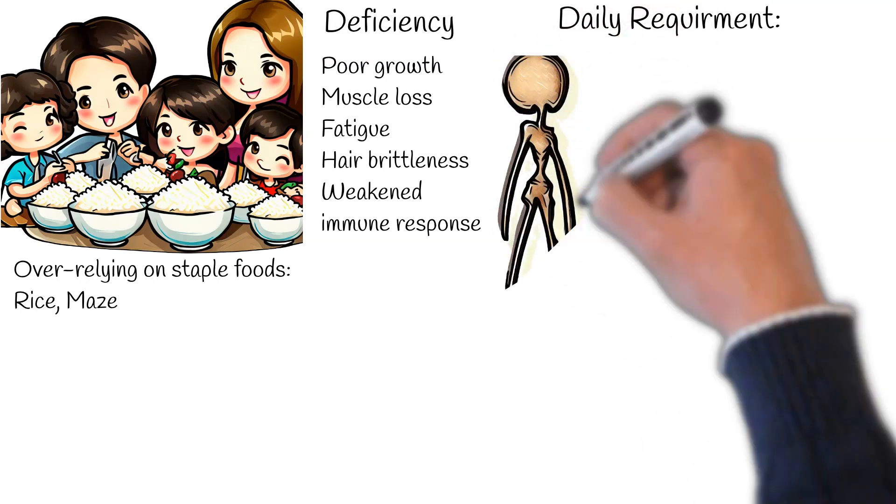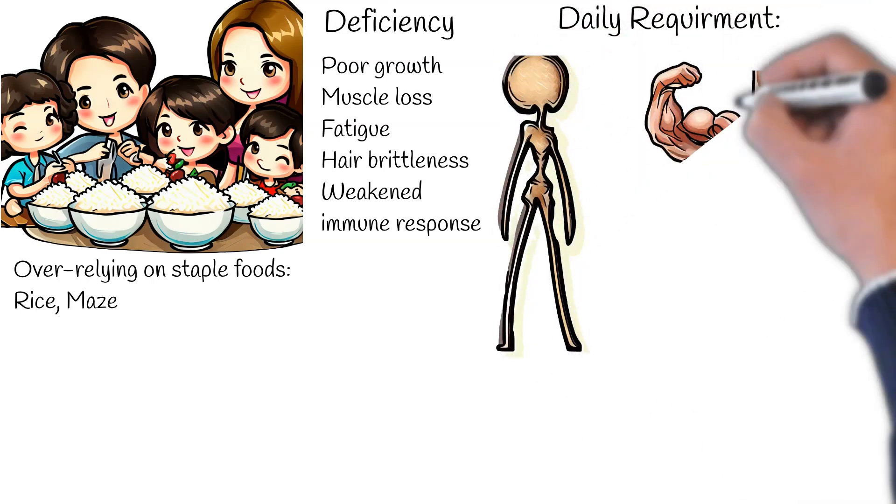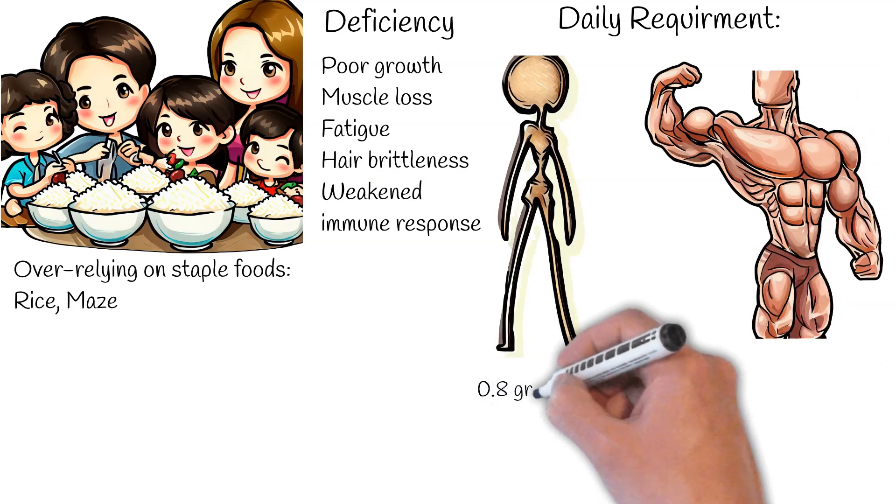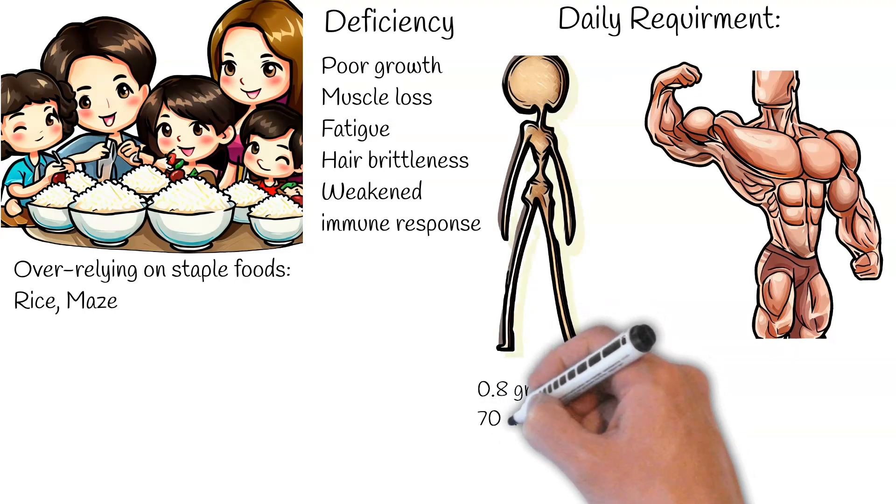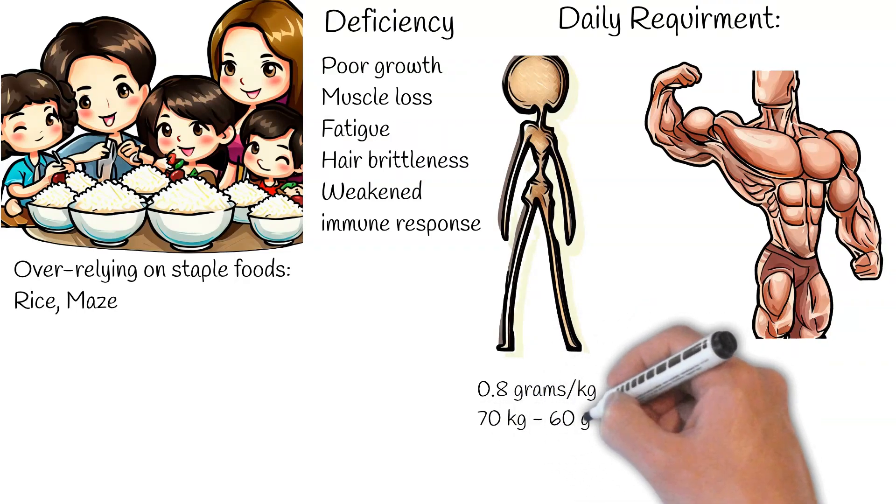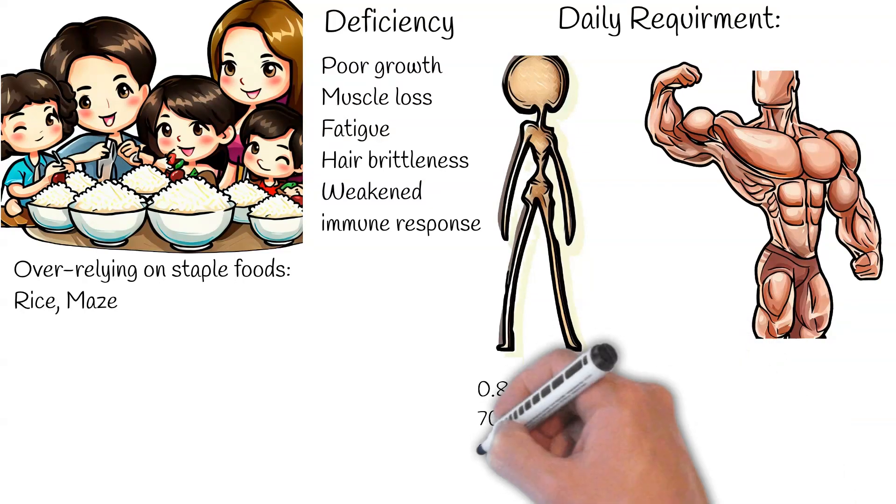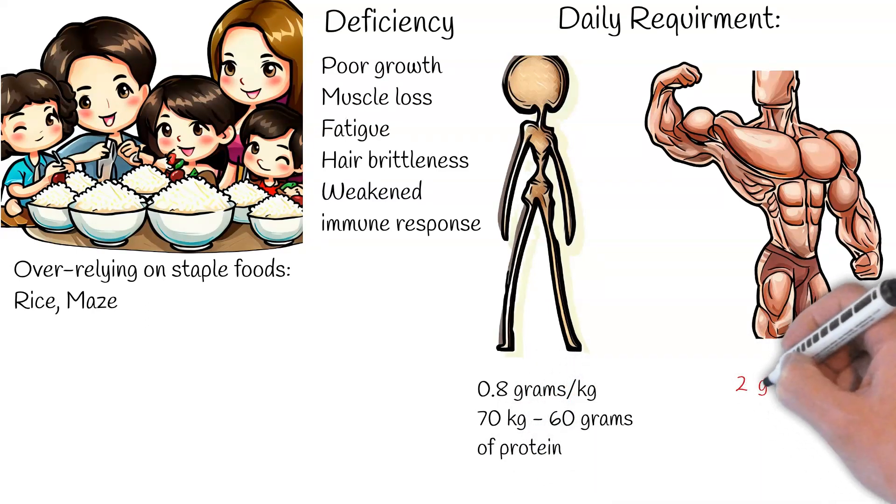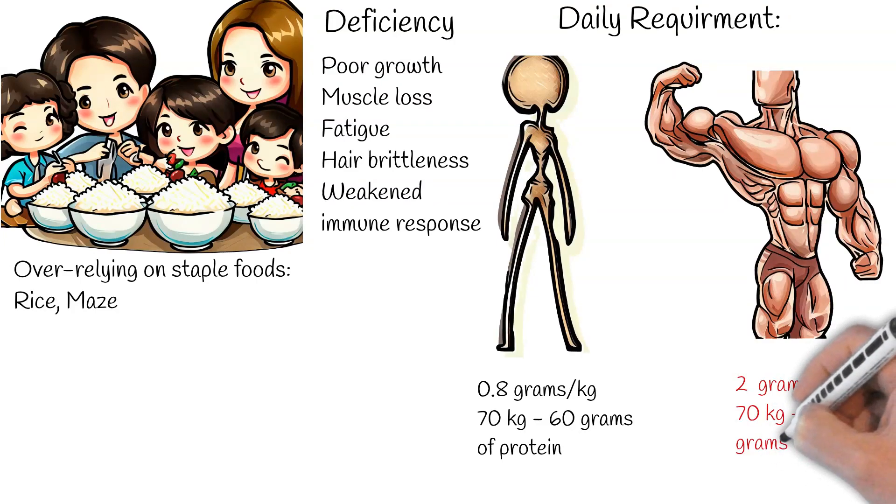So, how much protein should one consume? On average, an individual needs approximately 0.8 grams of protein per kilogram of body weight. For instance, someone weighing 70 kilograms should aim to consume about 60 grams of protein daily. Athletes, given their rigorous physical demands, might require closer to 2 grams per kilogram, although this can vary. A 70 kilogram athlete might thus need about 150 grams.